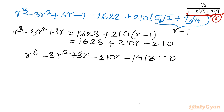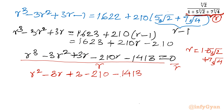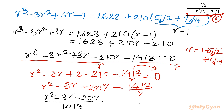Now R is a constant value — R equals 1 plus 5 cube root 2 plus 7 cube root 4. Dividing both sides by R gives R² minus 3R plus 3 minus 210, which is minus 207, minus 1413 divided by R equals 0. Taking the 1413/R term to the right hand side: R² minus 3R minus 207 equals 1413 divided by R. Now dividing both sides by 1413: (R² minus 3R minus 207) divided by 1413 equals 1 over R.